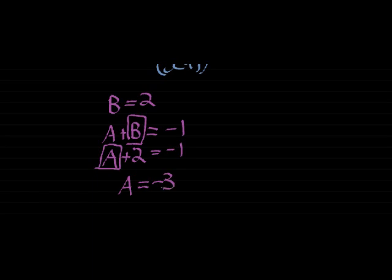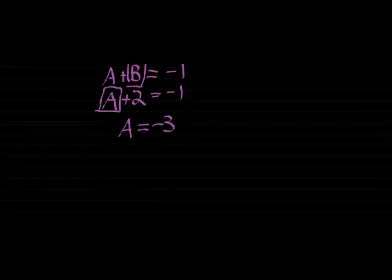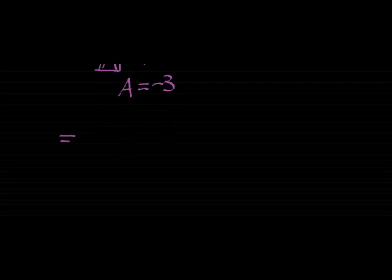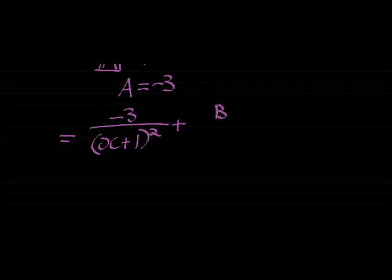In other words, my partial fractions would be: a is negative 3 and a was over the (x plus 1) squared bracket, plus b was over the (x plus 1) bracket and b is equal to 2. And there we go.